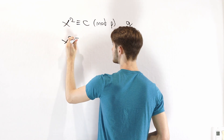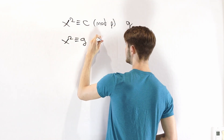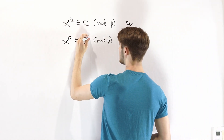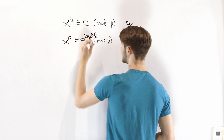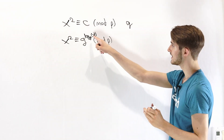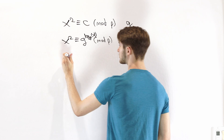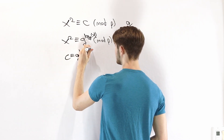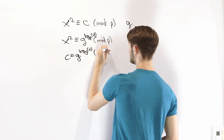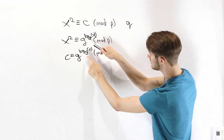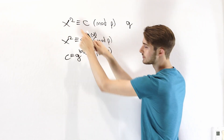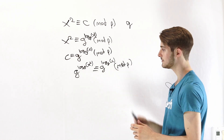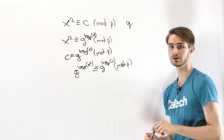We can say that x squared is congruent to some power of g mod p, and we'll use the index notation log base g of x squared — this is the index of x squared relative to g. Similarly, C is congruent to g to the log base g of C mod p. We can substitute both of these values into the original congruence. Note that this is not a standard logarithm — it's the index of the number relative to g.